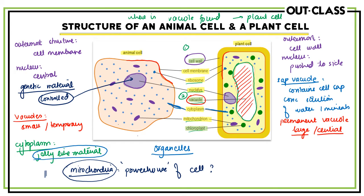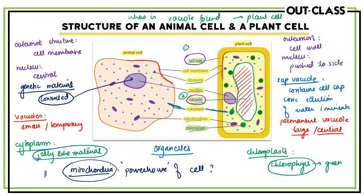The last structure, found only in plant cells, is the chloroplast — the small green structures visible here. These are not found in animal cells. Chloroplasts contain the pigment known as chlorophyll, the green pigment that gives plants their green color. The green color you see in leaves, trees, and plants is because of the chlorophyll found in chloroplasts. Chlorophyll is essential because it enables plants to carry out photosynthesis.